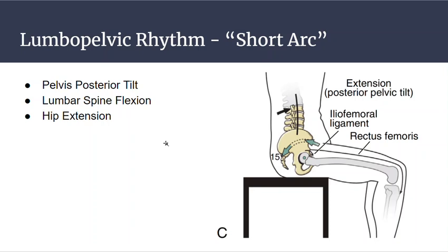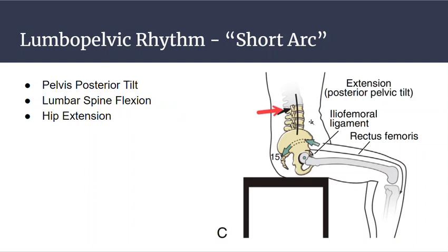Moving into a short arc posterior pelvic tilt — you're sitting in a chair and you kind of tuck your hips under. You'll be in posterior pelvic tilt and lumbar spine flexion. Because remember, a flat spine is a flexed spine, because the normal curvature of our lumbar spine is lordosis, or a slight extension. And when you posterior pelvic tilt in a short arc, you're also going into hip extension.